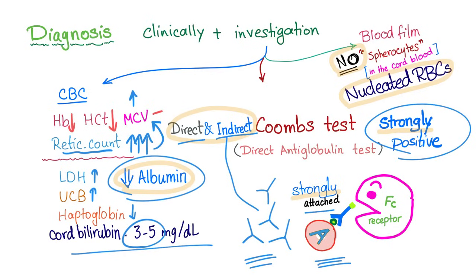On peripheral smear: no spherocytes — the entire red blood cell was consumed by the macrophage because of the strong antigen-antibody attachment. You can find nucleated red blood cells. When the bone marrow is working like crazy to produce new red blood cells, you end up with some immature, nucleated red blood cells.